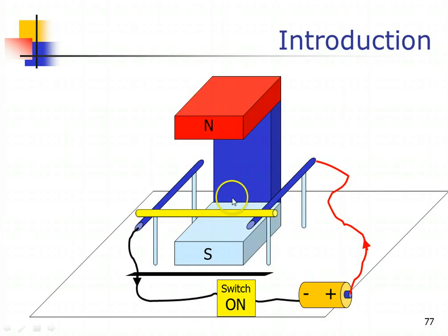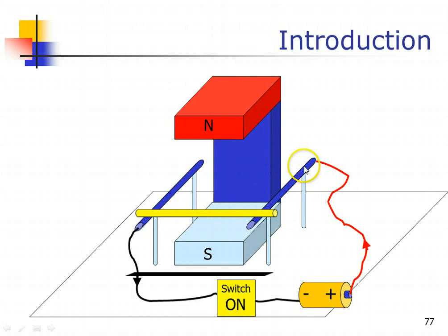Therefore, this suggests that the direction of force acting on the copper rod will be outwards — coming out of the screen you are looking at. The copper rod will move from the back of the rails towards the front. That is how we use Fleming's Left-Hand Rule to determine the direction of force acting on a conductor carrying a current.